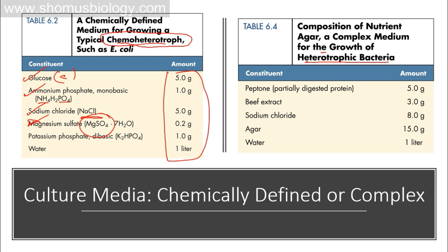In chemically defined media, we provide only the chemical factors bacteria need to survive — glucose for carbon, ammonium phosphate for phosphorus, sodium chloride for sodium and chloride, magnesium sulfate for magnesium and sulfur, and potassium phosphate for potassium — then add water. But for a complex medium, we have beef extract, peptone, sodium chloride, agar, and water.